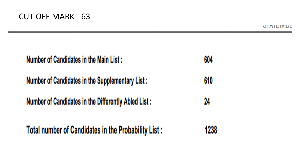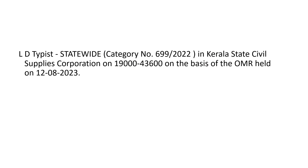Number of candidates in the supplemental list is 6010. Number of candidates in the differently abled list is 24. Total number of candidates in the probability list is 50,237. LD Typist State-wide Category Number 659 in Kerala State Civil Supplies Corporation.